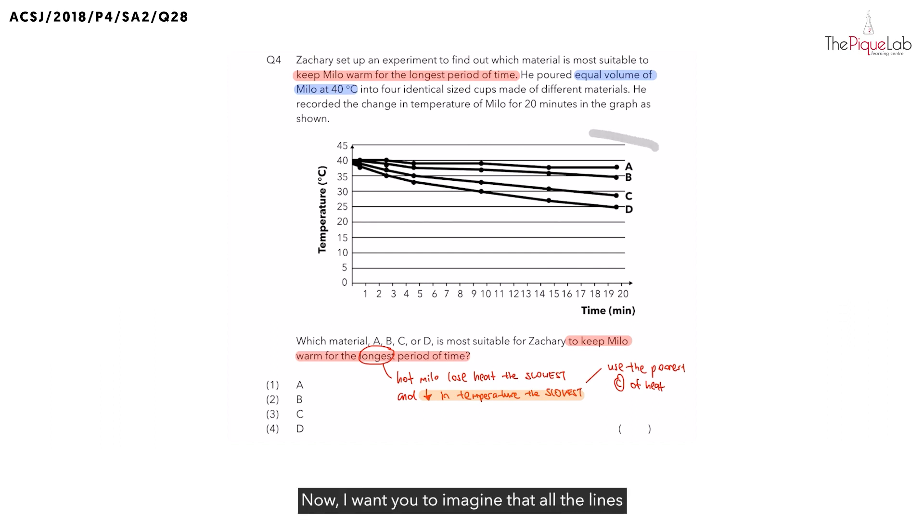Now, I want you to imagine that all the lines of this graph are like slides in a playground. And if they are all slides, which one would allow you to slide down the fastest? Is it going to be A, B, C, or D? Straight away, I'm sure you can tell me the slide that allows you to slide down the fastest. And in the same way, the temperature of the hot Milo inside of D is also going to decrease the fastest.